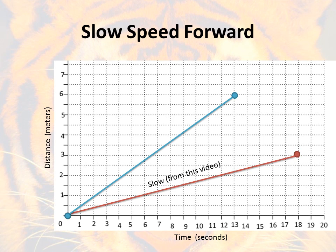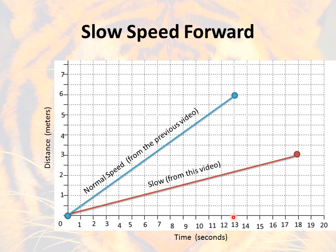Now let's look at the graphs we just made. The graph at my normal speed is the blue line. These two lines have a major difference — look at the angle of the line. Rather than trying to memorize what the angle means, just use the numbers. The red line means it took me 18 seconds and I moved about three meters. On the blue line, I was walking for 13 seconds and had gone six meters. So the blue line shows me moving faster than the red line.